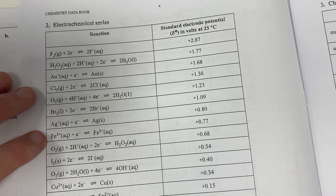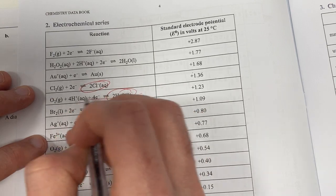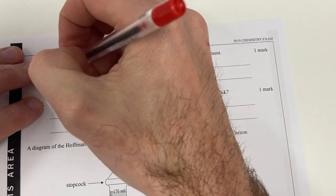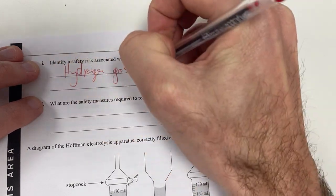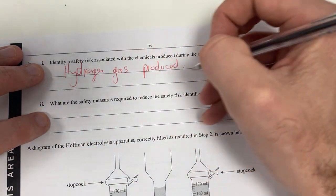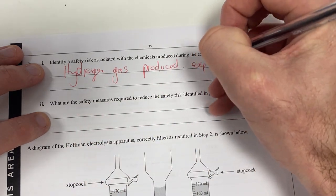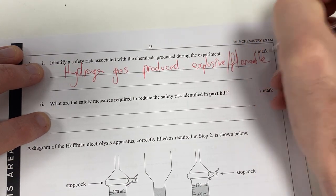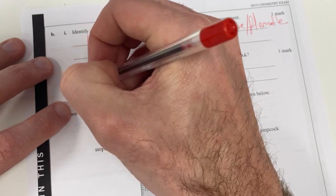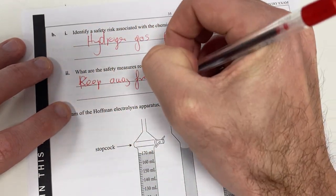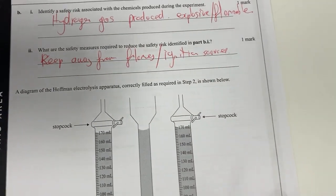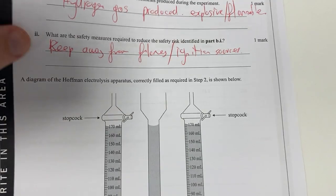On my other side, I'm going to have chlorine and water. Water is my strongest reductant, forming oxygen. So my safety risk in this experiment is probably going to be the hydrogen gas produced. Why is it a safety risk? Because it's explosive slash flammable. What is one safety measure required? We need to remove or keep it away from flames slash ignition sources.